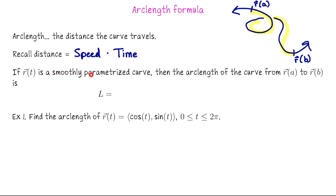So if r of t is a smoothly parametrized curve, then the arc length of the curve from r of a to r of b, or in other words, the total distance that we travel as we move from r of a to r of b along this curve is the integral from a to b of the speed of the parametrization. So that's the length of the velocity vector r prime dt.